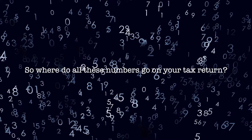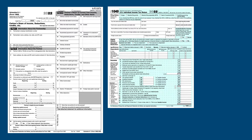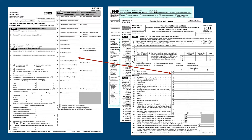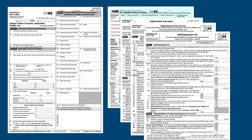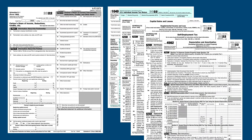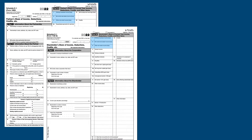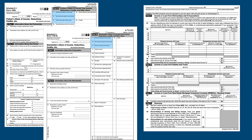So now that we know all that, where do all these numbers from the K-1 go on your tax return? Many of the items on the K-1 go directly to the corresponding line on either the recipient's Form 1040 or the appropriate schedule. Using the Partnership K-1 as an example, these items go directly on the 1040, these on Schedule D, this on Schedule E Page 1, this on Schedule SE, and this on Form 4952. These entries here, involving business and rental income or losses, are entered on page 2 of Schedule E.